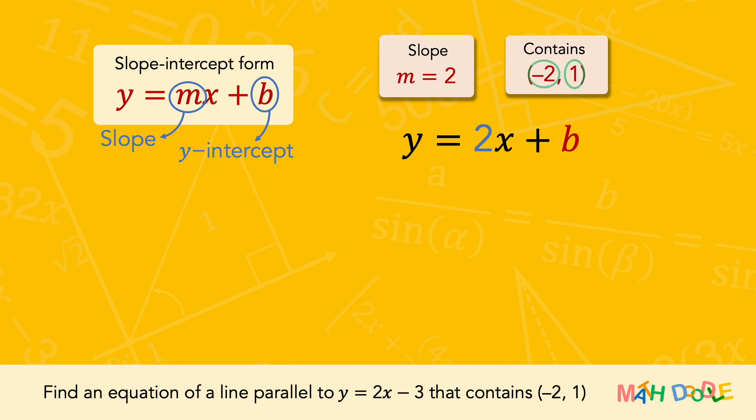Since we know that the line passes through the point minus 2, 1, let's substitute these values into the x and y of the equation.